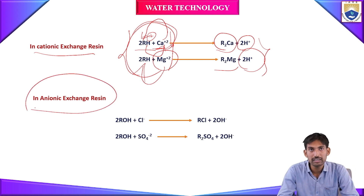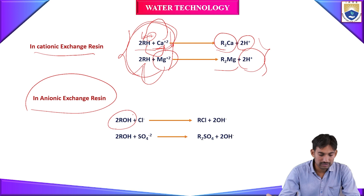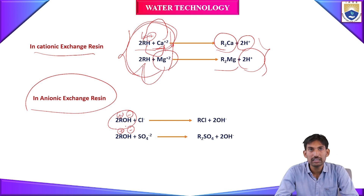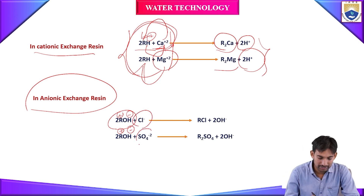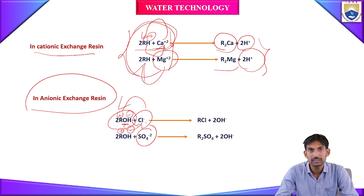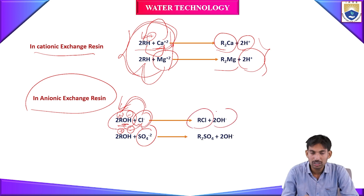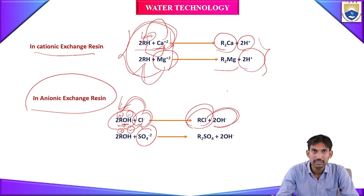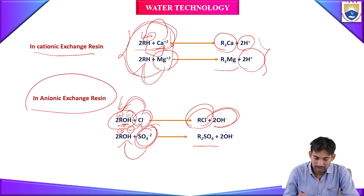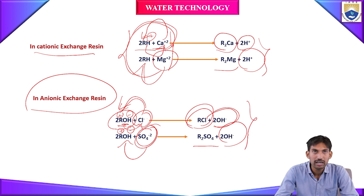In the case of anionic exchange resins (2R⁺OH⁻), if water contains negative ions like chloride and sulfate, those react with the anionic exchange resin. The OH⁻ ions are replaced: Cl⁻ reacts with the anionic exchange resin to form RCl and releases 2OH⁻ ions. Similarly, sulfate ions present in the water react with 2ROH (anionic exchange resin) to produce the corresponding salt.